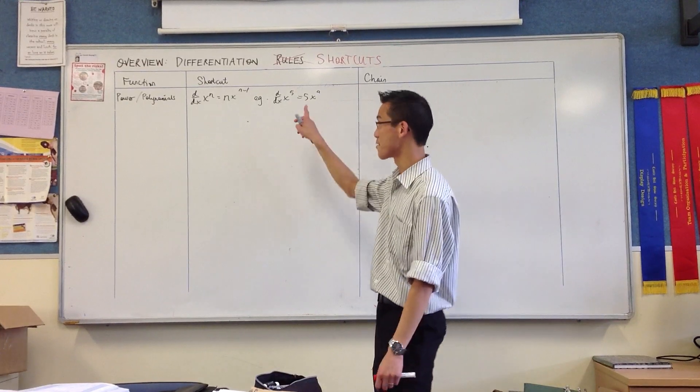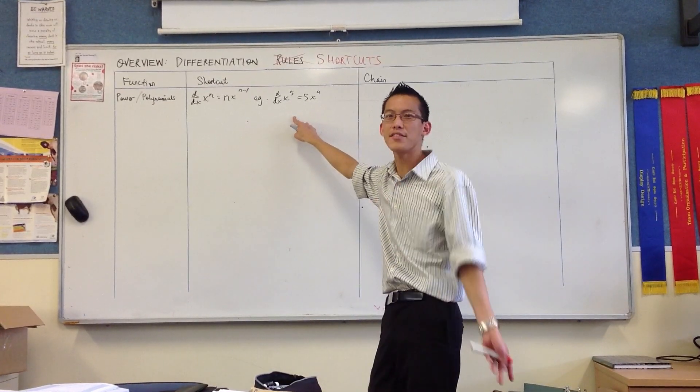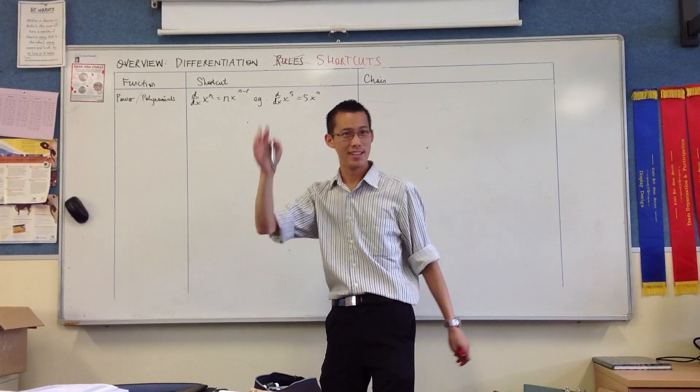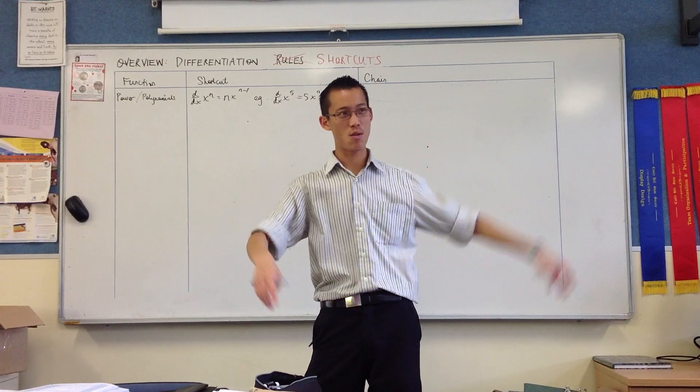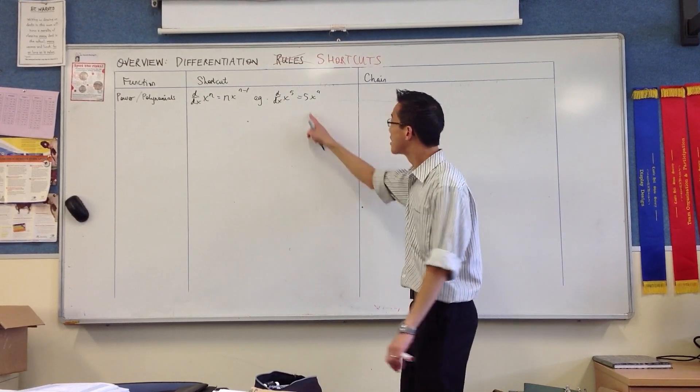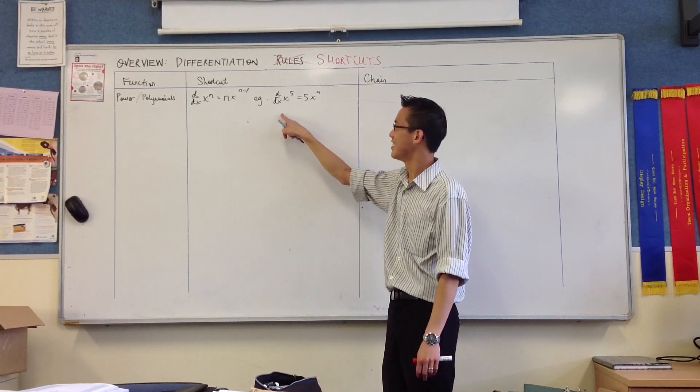Now, by the way, let's just remember what you would have had to have done at this point here if we didn't have this shortcut, if we didn't know this rule. You'd have to go first principles, limit as h approaches 0 of f, blah blah blah, and then you have this monstrous thing you have to expand and simplify. This really is a shortcut, a very, very much shorter cut.